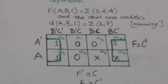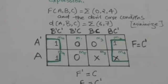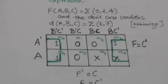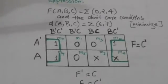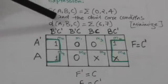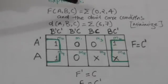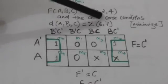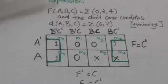Suppose there is a function f which is the sum of three minterms m0, m2, and m4, of three binary variables a, b, and c, and the don't care conditions are m6 and m7. Now we have to minimize this function f.